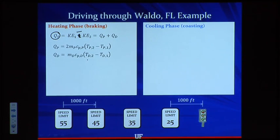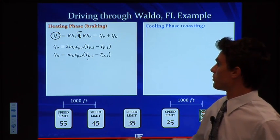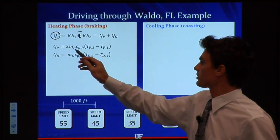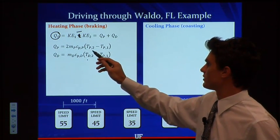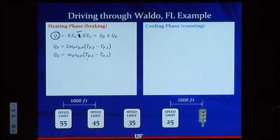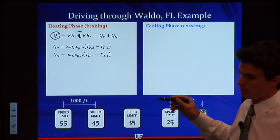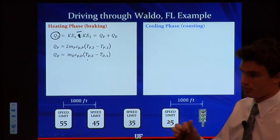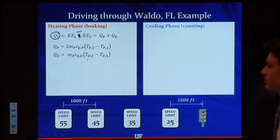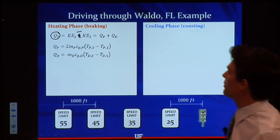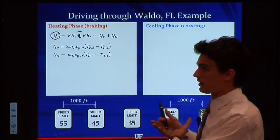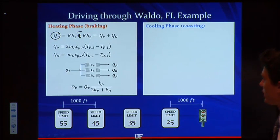Q_P is equal to two times the mass of the pad times C_p of the pad times the change in temperature of the pad, because there are two pads per disk. Initially the pad will be at T_infinity, the ambient air temperature, and T_P2 is the temperature of the pad after braking. You follow the same analysis for the disk, which has a different mass and different heat capacity properties since it's made of a different material. We then use a quick thermal circuit to determine how much of that heat goes to the pad and how much goes to the disk.